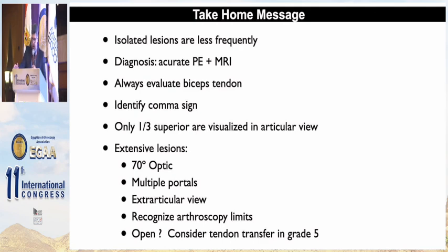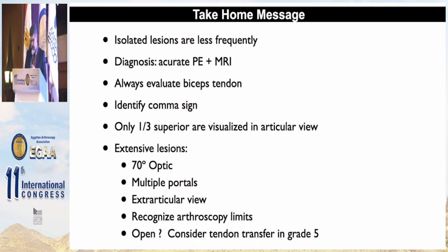Take-home messages: Isolated lesions are less frequent. For diagnosis, perform an accurate physical exam and MRI, always evaluate the biceps status, and identify the coma sign. Remember that only the superior thirds are visualized in articular view. For big or complete lesions, the subacromial view is essential. For extensive lesions, a 70-degree optic is an option with multiple portals and extra-articular view. Recognize the arthroscopic limits, and for grade 5 lesions, consider tendon transfer or open surgery for retracted and isolated large lesions.